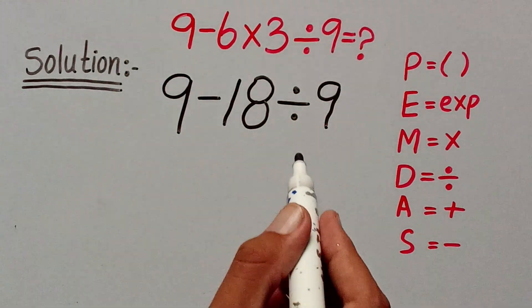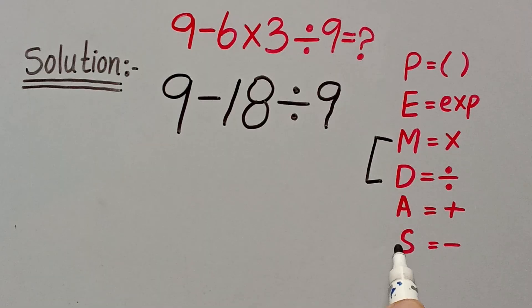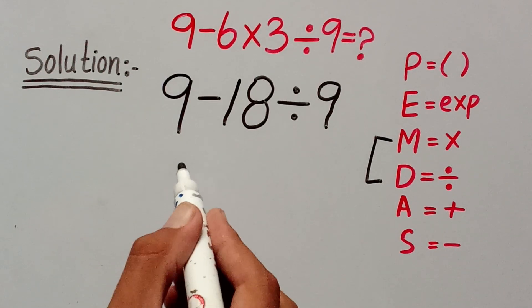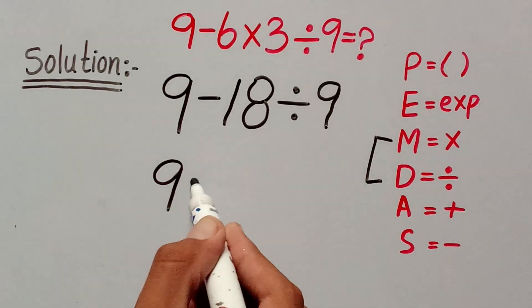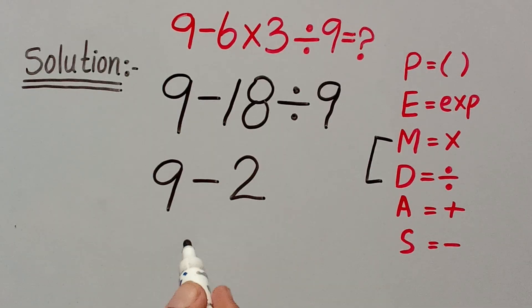Now in the next step, multiplication and division have higher priority than addition and subtraction. So first, we solve the division. I can write here 9 minus 18 divided by 9 equals 2. And 9 minus 2 equals 7. This is the final answer.